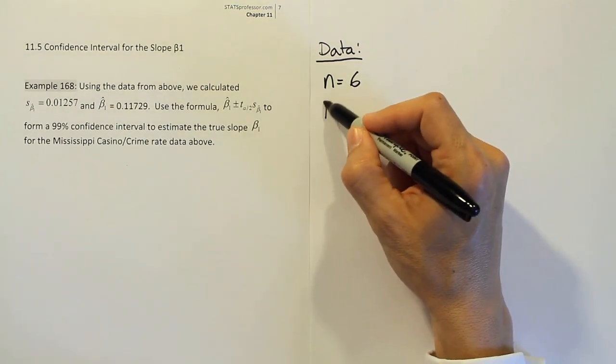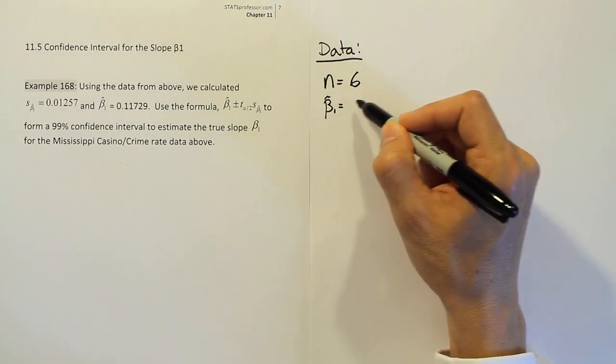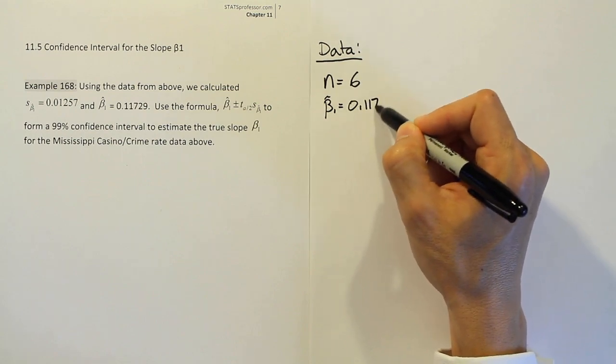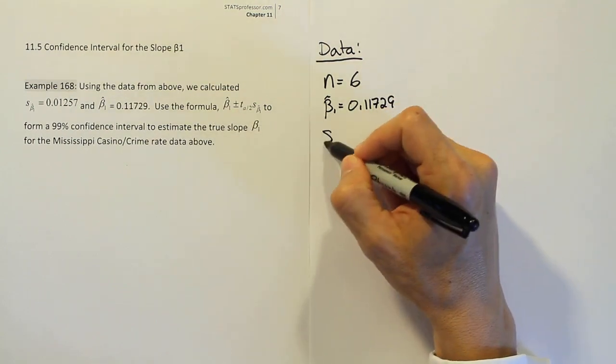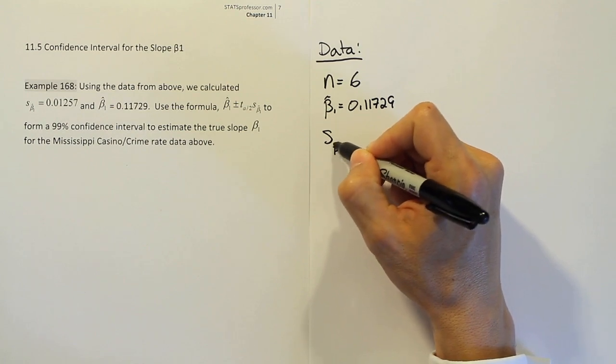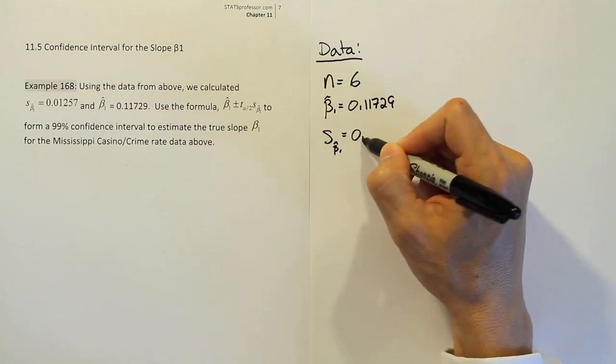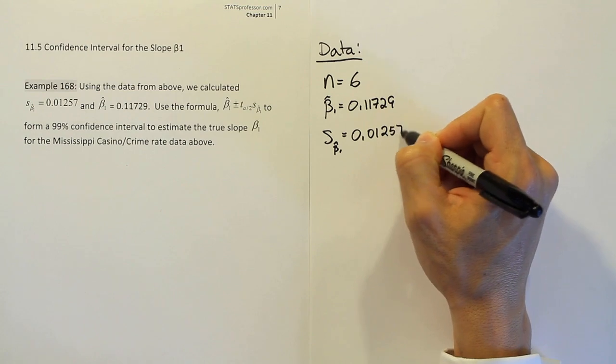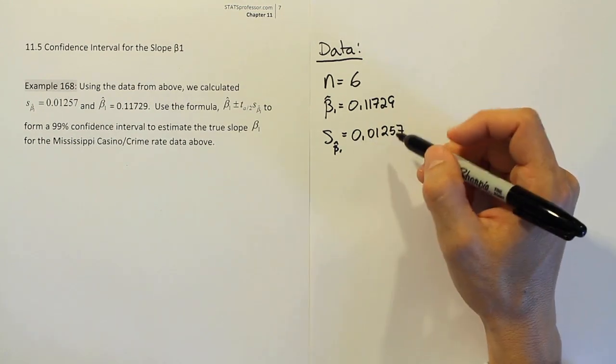They then told us our beta 1 hat and they tell us that it's 0.11729. They go on to give us the standard error for that quantity. So beta 1 hat's standard error is 0.01257.